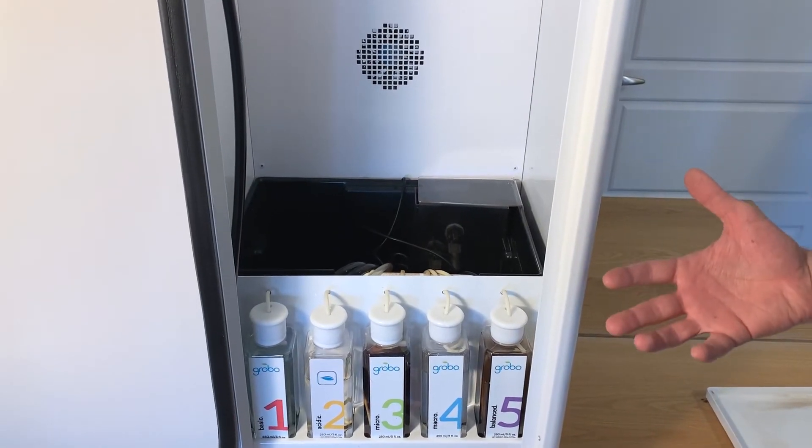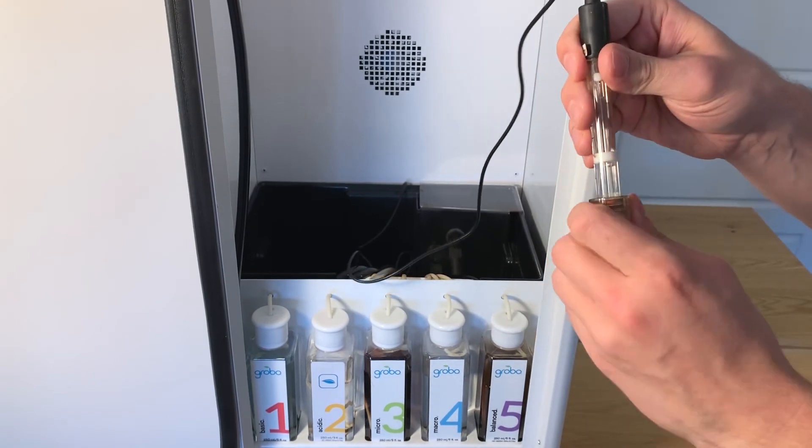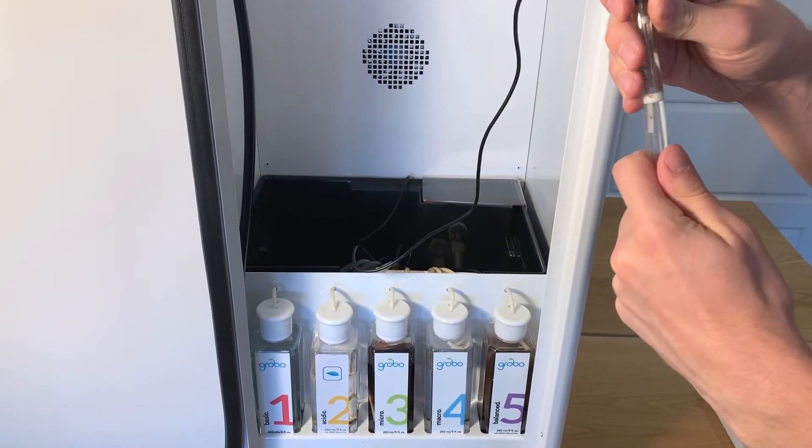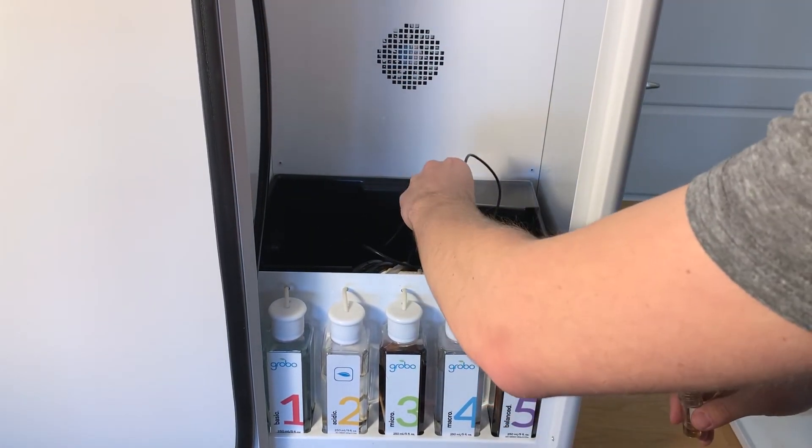Back at the front of your Grobo now. You're going to take the sensor, take the top cap off, and then slide it into the hole in the white cover here.